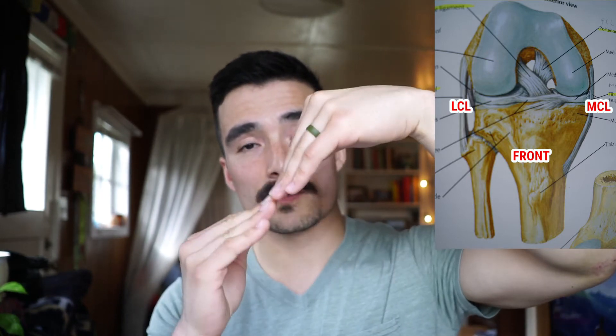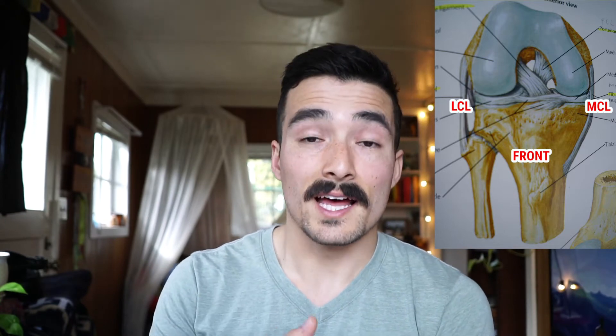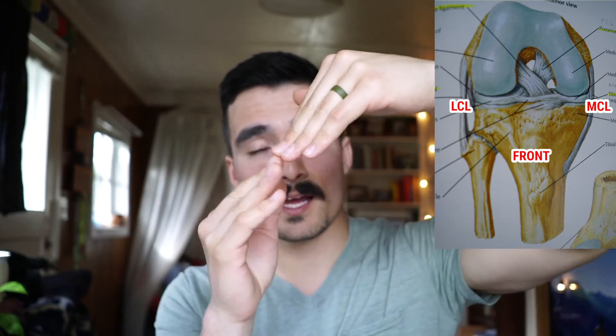Now let's move on to ligaments. As I said, a ligament is a bone-to-bone attachment. On the inside of the knee you have your medial collateral ligament, or MCL, which prevents the leg from bending inward. On the outside you have your LCL, or lateral collateral ligament, which prevents the leg from bending outward. And inside the joint you have your ACL and your PCL — the anterior and posterior cruciate ligaments.